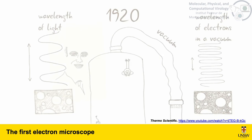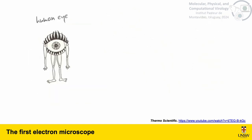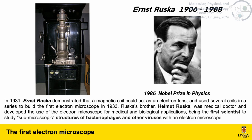It was crucial at the beginning of the past century to discover that the electron can be accelerated in vacuum. In 1931 Ernest Ruska demonstrated that a magnetic coil could act as an electron lens, and used several of these coils in series to build the first electron microscope in 1933. Ruska's brother Helmut was a medical doctor, and he developed the use of the electron microscope for medical and biological applications, being the first scientist to study submicroscopic structures of bacteriophages and other viruses with an electron microscope. Thus, the electron microscope has been a tool for the study of viruses from the very beginning.